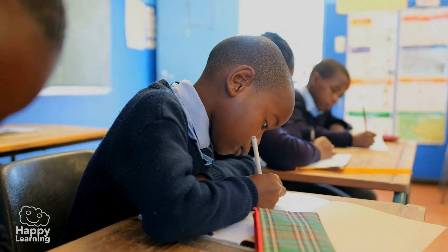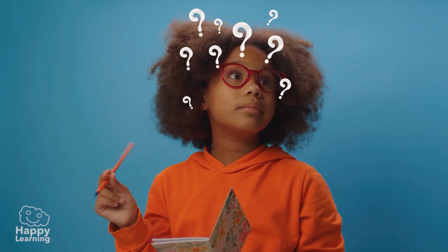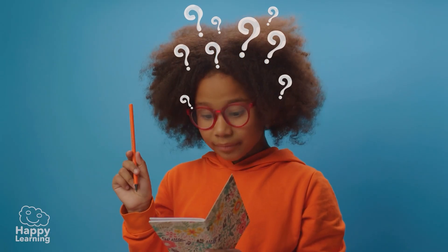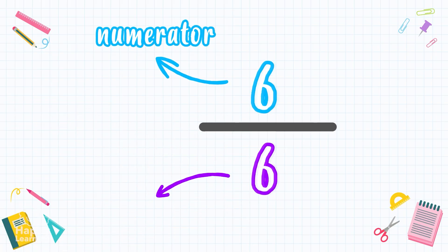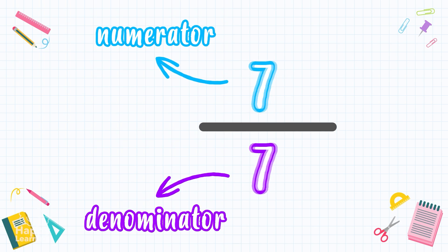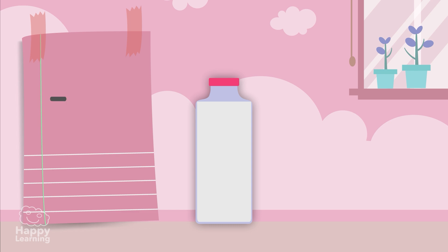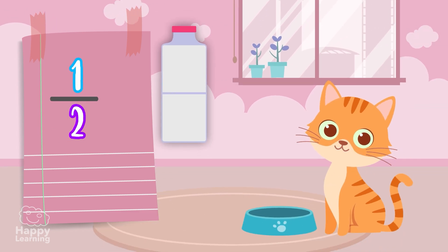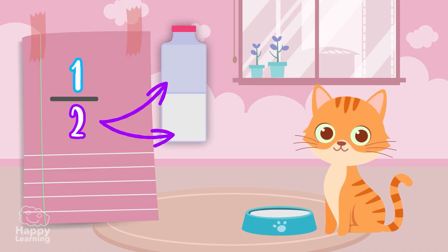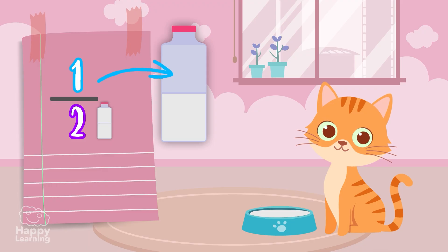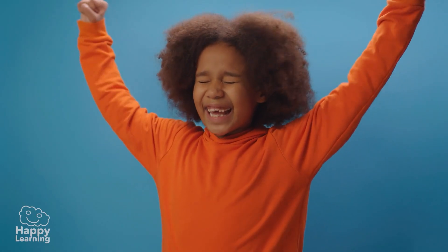First, let's do a little memory check. Do you remember what a fraction is? A fraction is made up of a numerator and a denominator. For example, if we divide this bottle of milk into two parts and take one of them to give to this kitty, the number two refers to the parts we divide the unit into, and the one refers to the amount we took for the kitty. We now have reviewed how a fraction is composed.